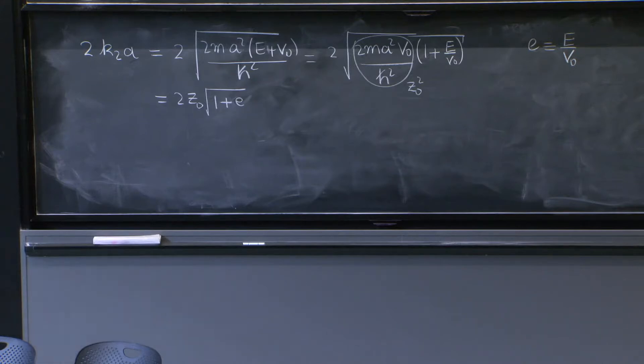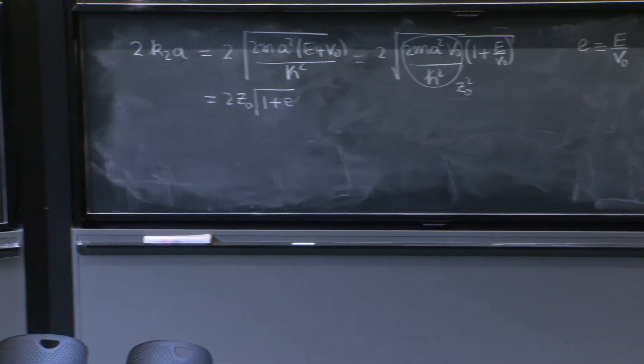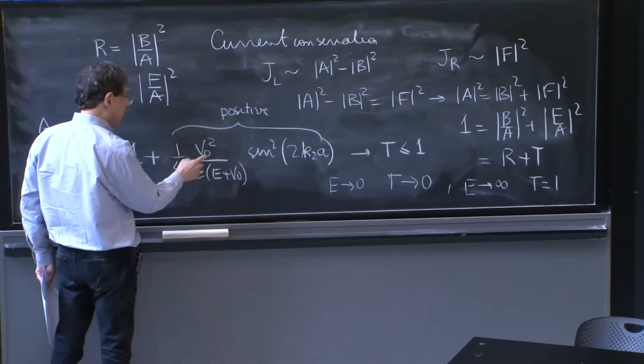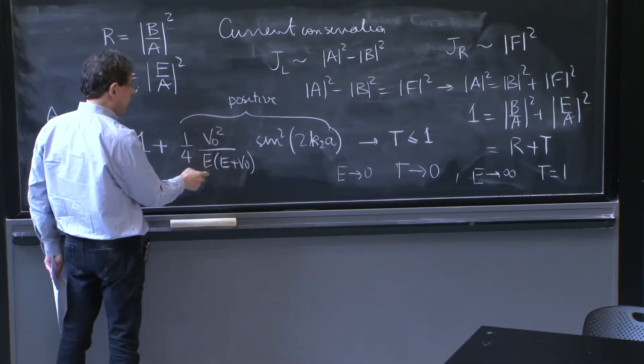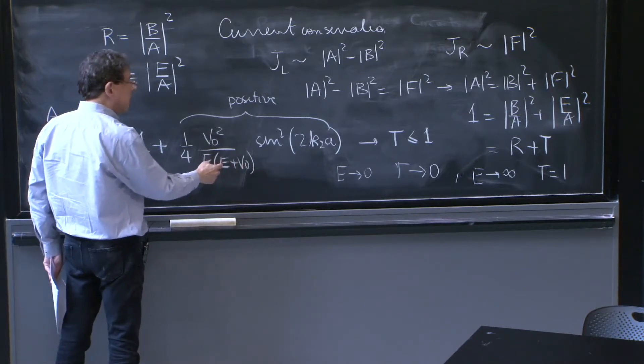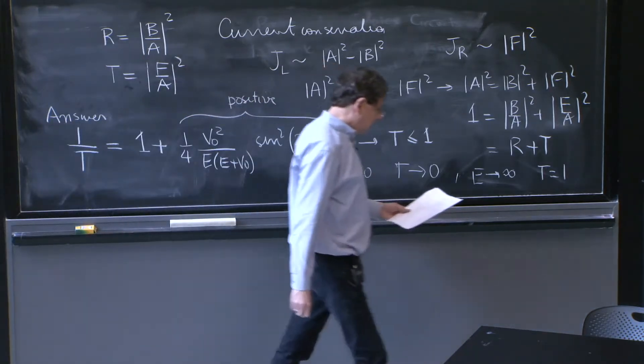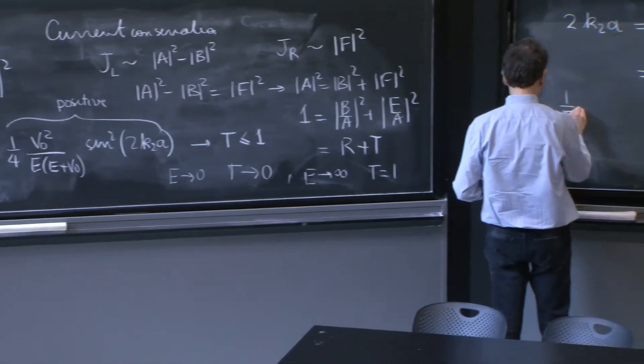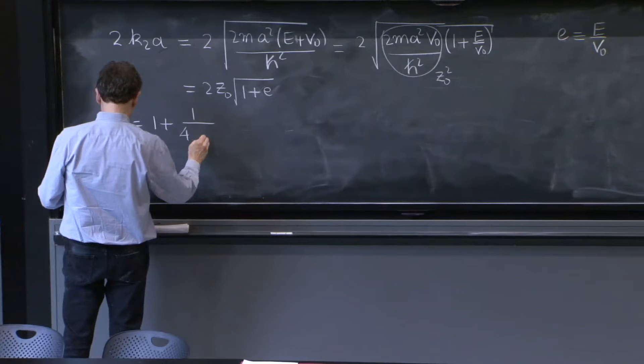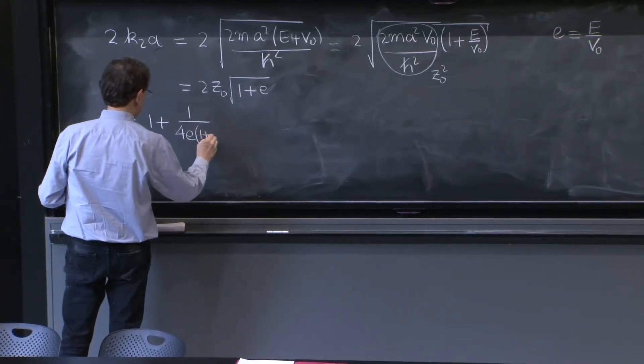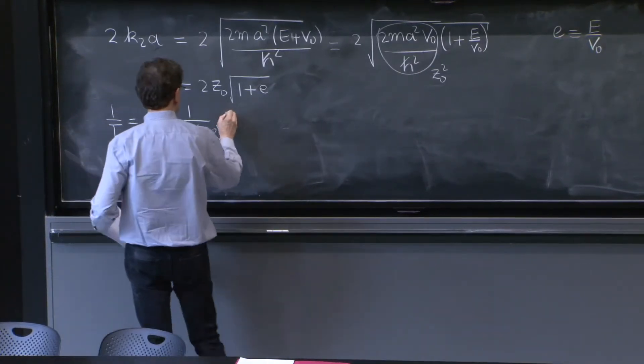So here you can divide by v0 squared, numerator and denominator. So you have an e over v0 and a 1 plus an e over v0. So the end result is that 1 over t is now 1 plus 1 over 4e, 1 plus e, sine